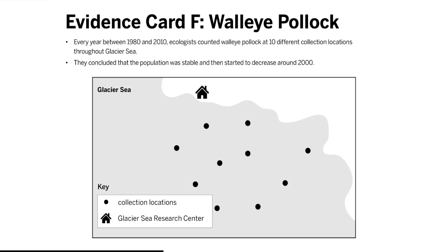A smaller walleye pollock population would require fewer energy storage molecules, leaving more for the moon jellies. With more energy storage molecules available, the moon jellies could reproduce more, resulting in more births.